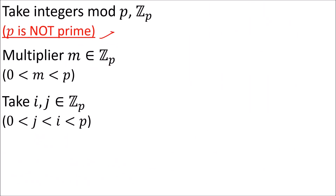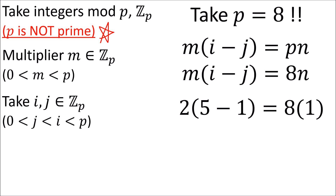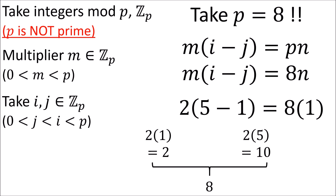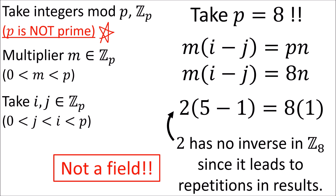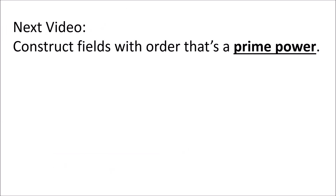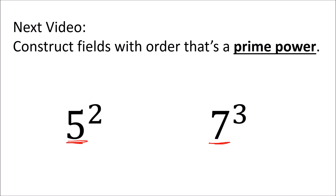Now if p wasn't prime, say it was the number 8, we could find a way of satisfying this equation that doesn't result in 0. For example, 2 times 5 and 2 times 1 are separated by a multiple of 8, meaning they give the same repeated result in the integers mod 8, so the number 2 has no inverse in the integers mod 8. So the integers mod p, where p is not a prime number, do not form a field, because some elements don't have multiplicative inverses. In the next video, we'll see how we can also construct fields from a number of members that's a prime power — so there are fields with 5² members and 7³ members, because these are powers of the prime numbers 5 and 7.